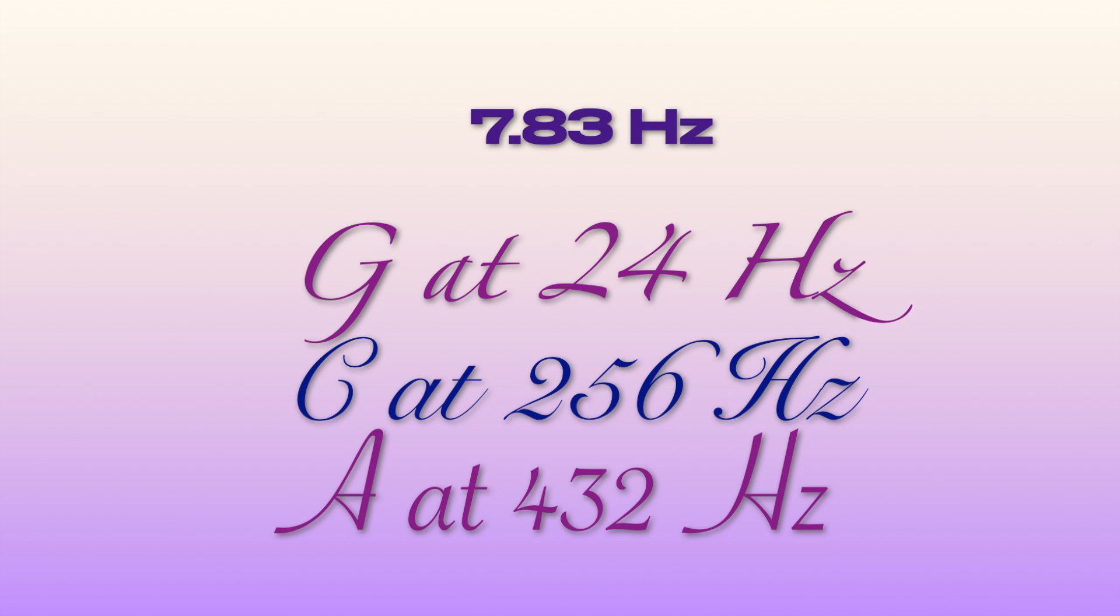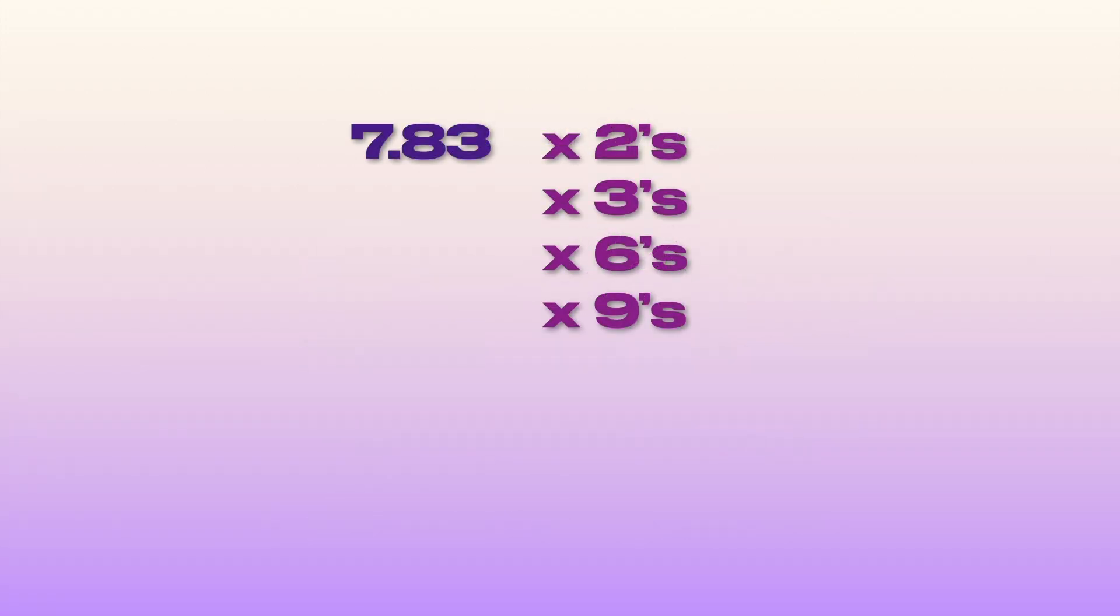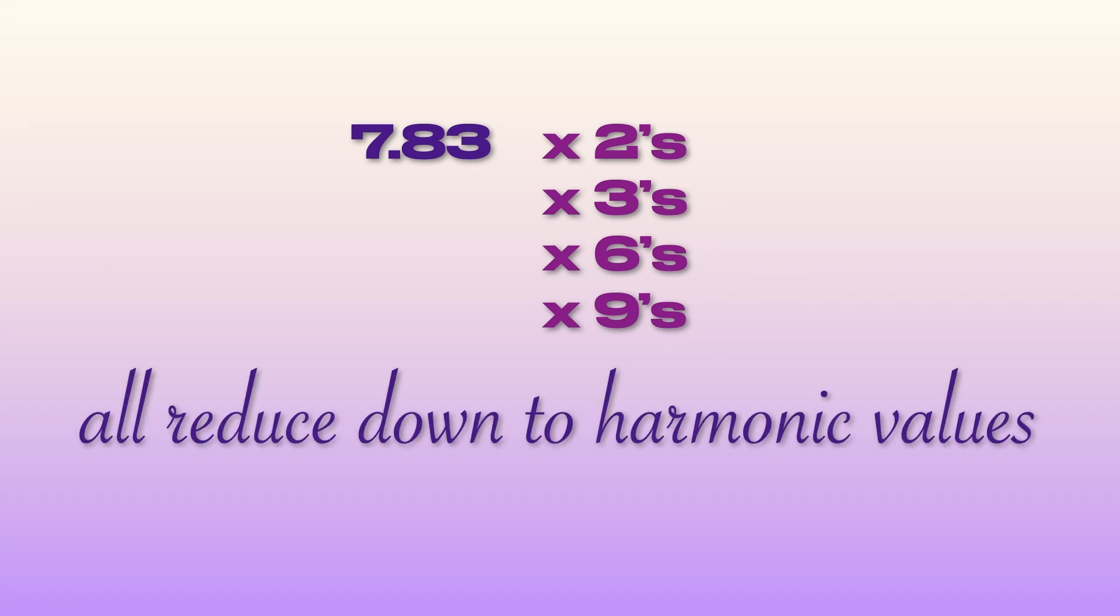7.83 Hz is a very uneloquent number, especially when comparing it to harmonic values like 24, 256, or the well-known 432. But if you iterate 7.83 through its doubles, triples, sextuples, or its times nines, and then reduce these uneloquent numbers with their messy decimals using vortex math, they actually reduce down to harmonic values.